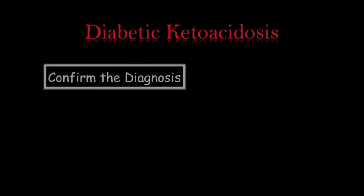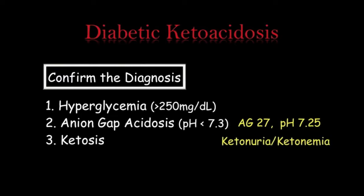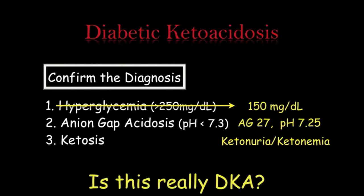So how do we make the diagnosis? We need to confirm it by one of these three things: hyperglycemia greater than 250 mg per deciliter, an anion gap acidosis with a pH less than 7.3, and ketosis. Interestingly, this patient had an anion gap of 27, a pH of 7.25, and had ketonuria and ketonemia. But when it came to hyperglycemia, the patient only had a blood glucose level of 150 mg per deciliter. So this begs the question: is this really DKA?